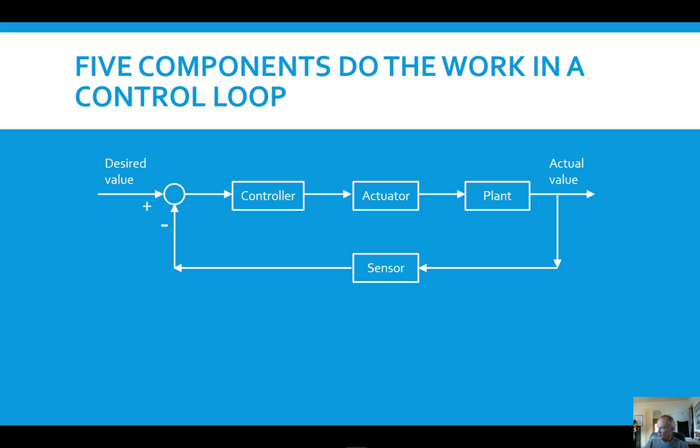If the actual value and the desired value are the same, then basically the controller will see a zero here and a zero means don't do anything. Everything's okay. The controller will send a signal out, don't do anything actuator. The actuator will not do anything to the plant. So that's the way this loop works.